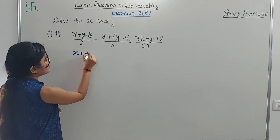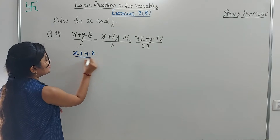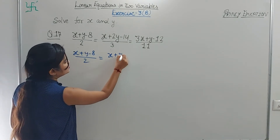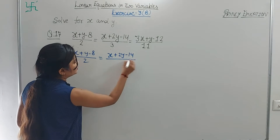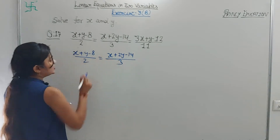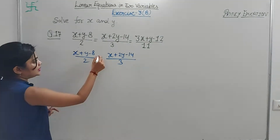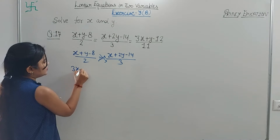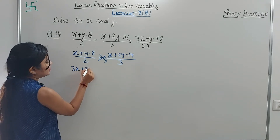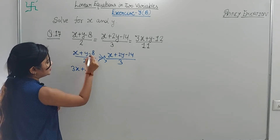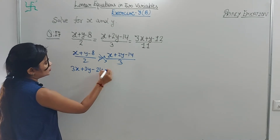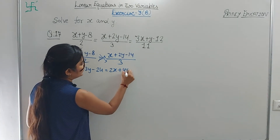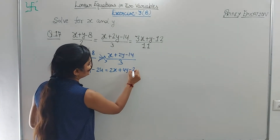So first we set (x + y - 8)/2 equal to (x + 2y - 14)/3. Now we cross multiply: 3x + 3y - 8 = 2x + 4y - 28.